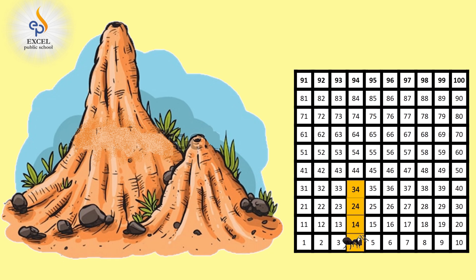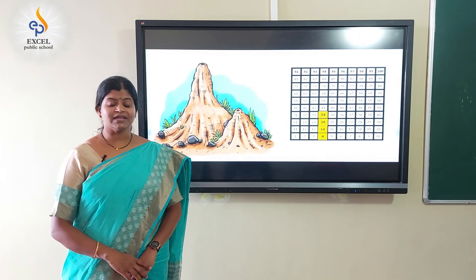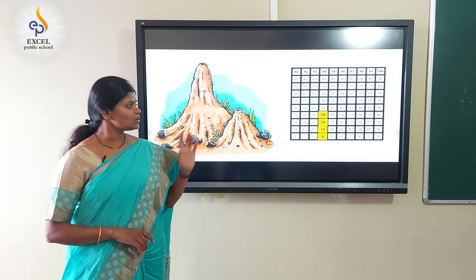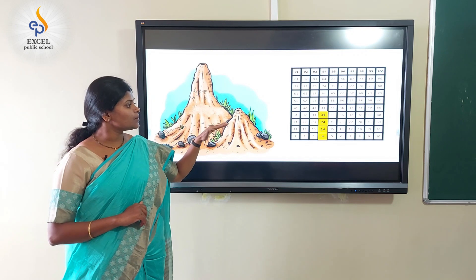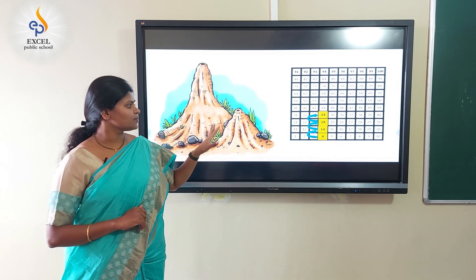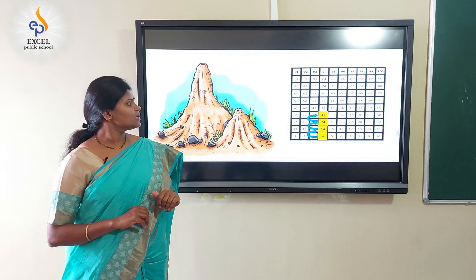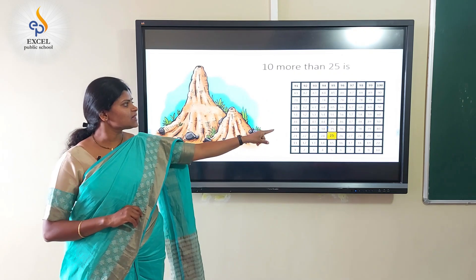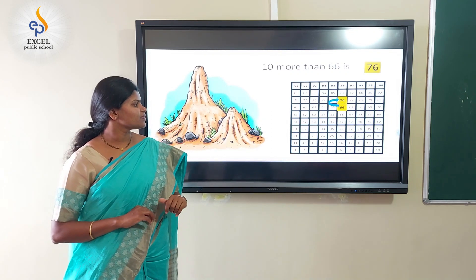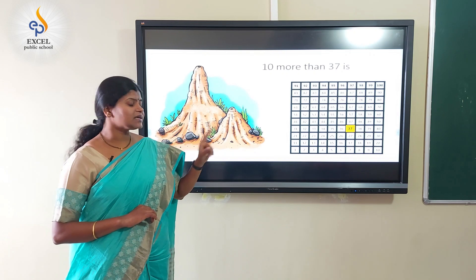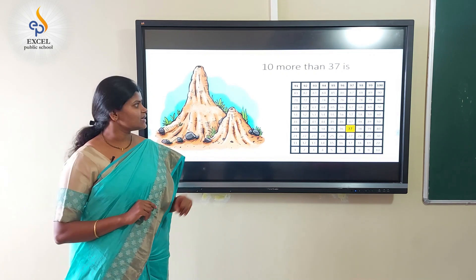Hmm, this seems to be pretty long. I am tired. Shweta ma'am, do you know a shorter path or a direct way to reach the 10th room? Don't worry Kittu, of course there is a shorter way. Let's look at it. Can you see some pattern here? For every 10th room, you can jump up to the number above a given number. For example, 10 more than 25 is 35, and 10 more than 66 is 76, and 10 more than 37 is? Yes, it is 47.